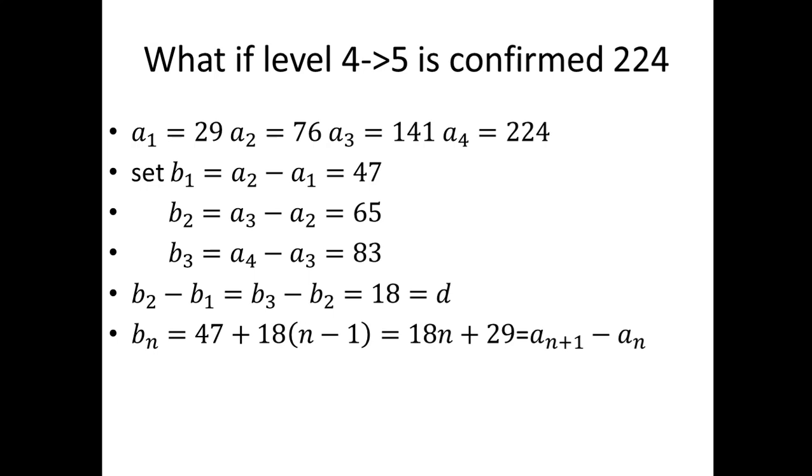So we can easily get Bn. It's 18n plus 29. It's also equal to An plus 1 minus An.